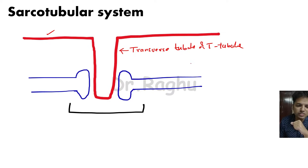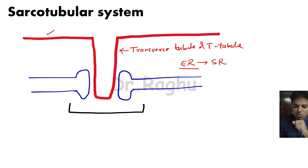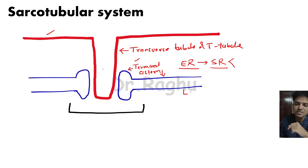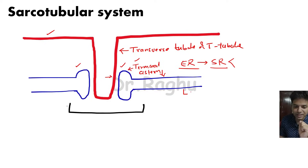The other structure in the sarcotubular system is the endoplasmic reticulum of the skeletal muscle, also referred to as the sarcoplasmic reticulum. The sarcoplasmic reticulum has two parts: the longitudinal sarcoplasmic reticulum and the terminal cistern, which is the expanded terminal part. The terminal cistern comes in close proximity to the T-tubule, and since one T-tubule is surrounded by two terminal cisternae, these three structures together form a triad.